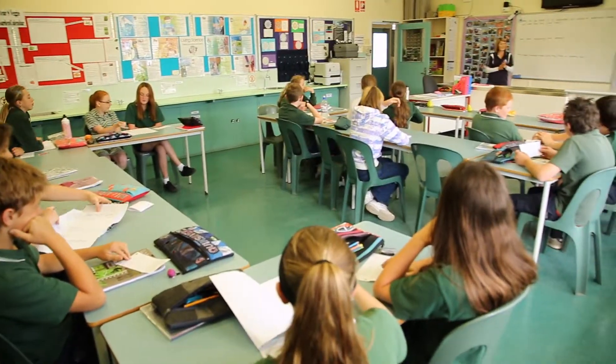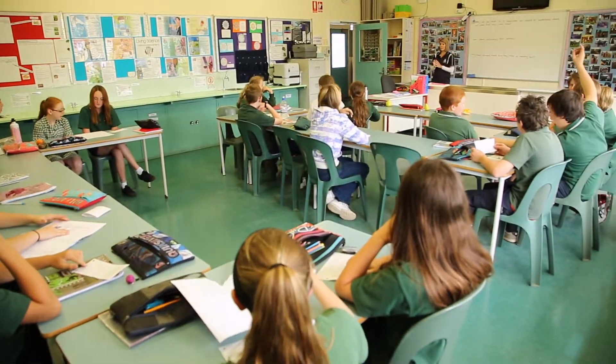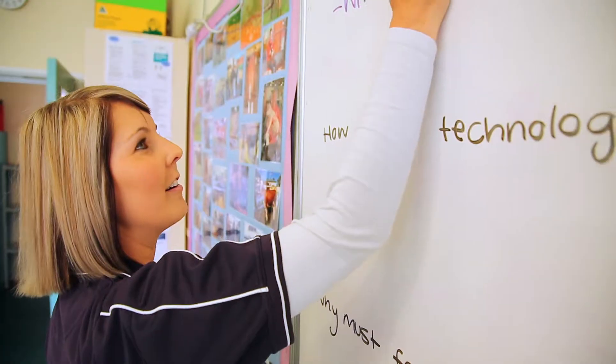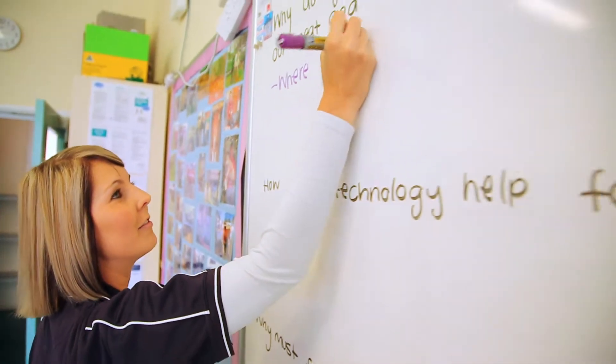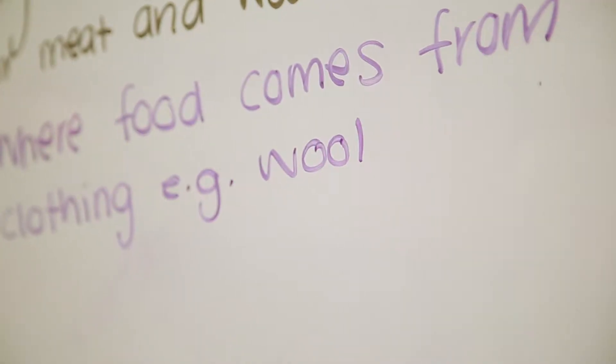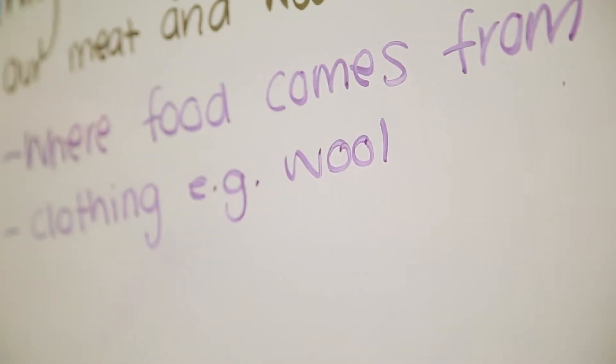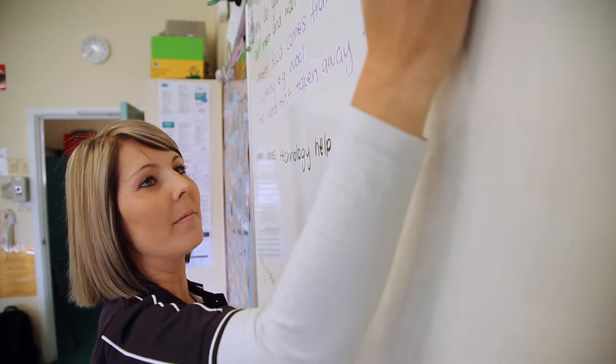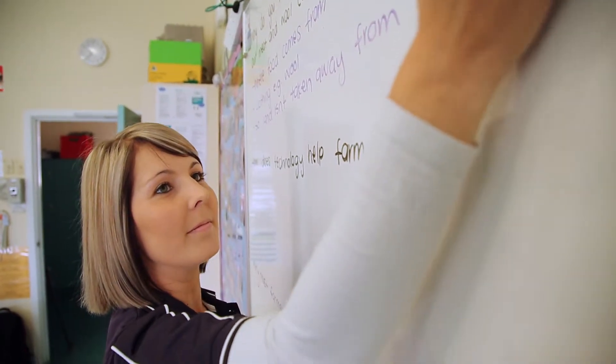Over the past two years I've taught science at a range of year levels and I've always taken a term or two terms to focus on something agriculture based. I've been trialling unit two, which is 'Where Does Our Meat and Wool Come From?', so we've been focusing on sheep and cattle.